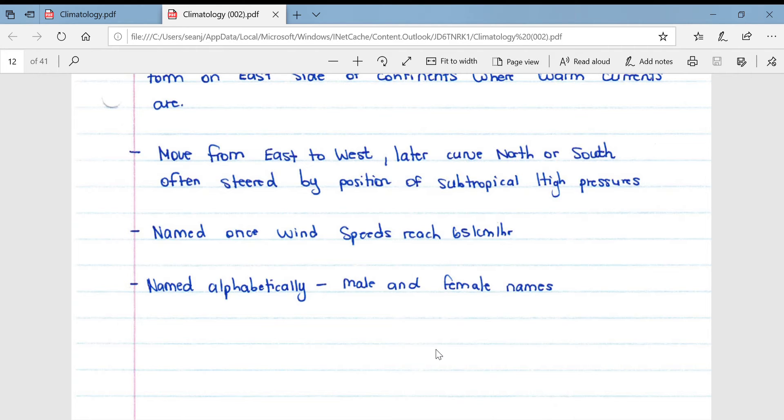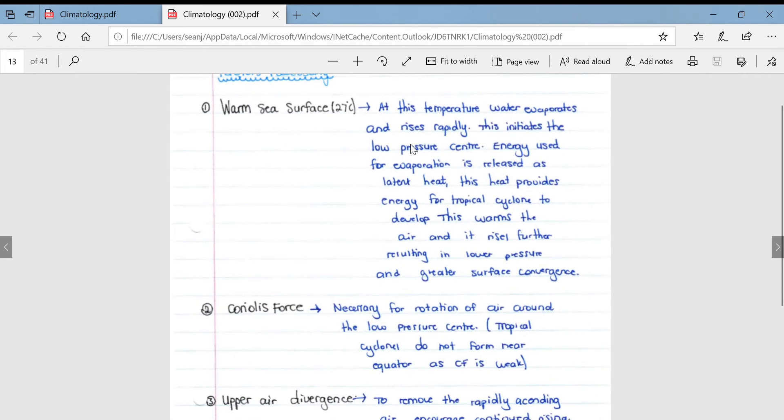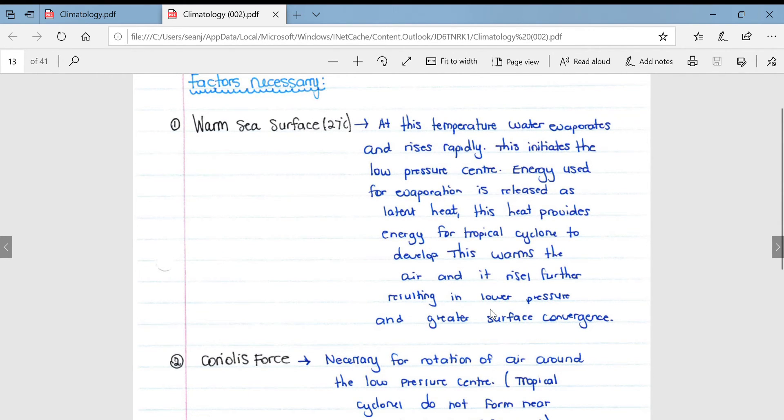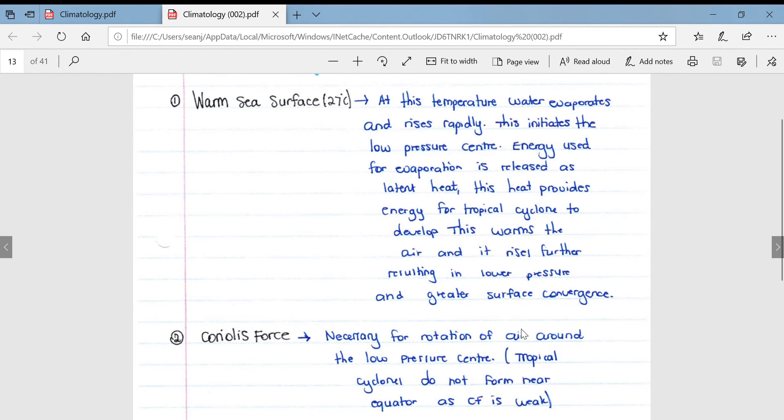Just going a bit more in depth into the factors which are necessary for their formation. Dealing with the warm sea surface of 27 degrees Celsius as a minimum. At this temperature, water evaporates and rises rapidly. This initiates the low pressure center, the very low pressure center which is characteristic of tropical cyclones. The energy is used for evaporation. The energy used for evaporation is released as latent heat. This heat provides energy for the tropical cyclone to develop. This warms the air and it rises further, resulting in extreme low pressure and greater surface convergence. So that greater surface convergence is referring to the wind on the surface of the earth.